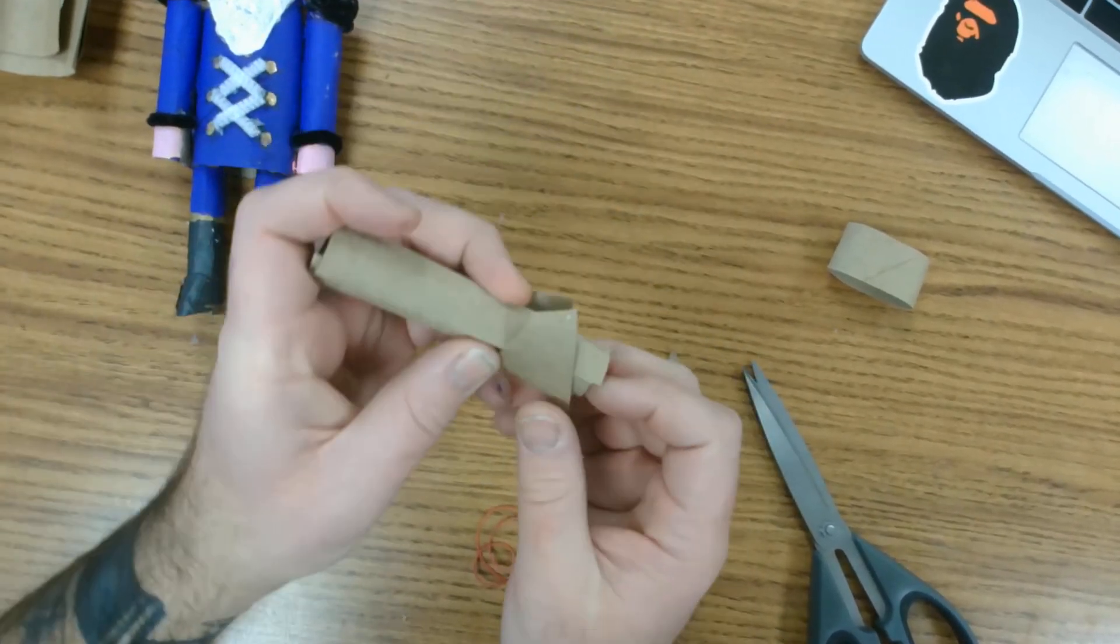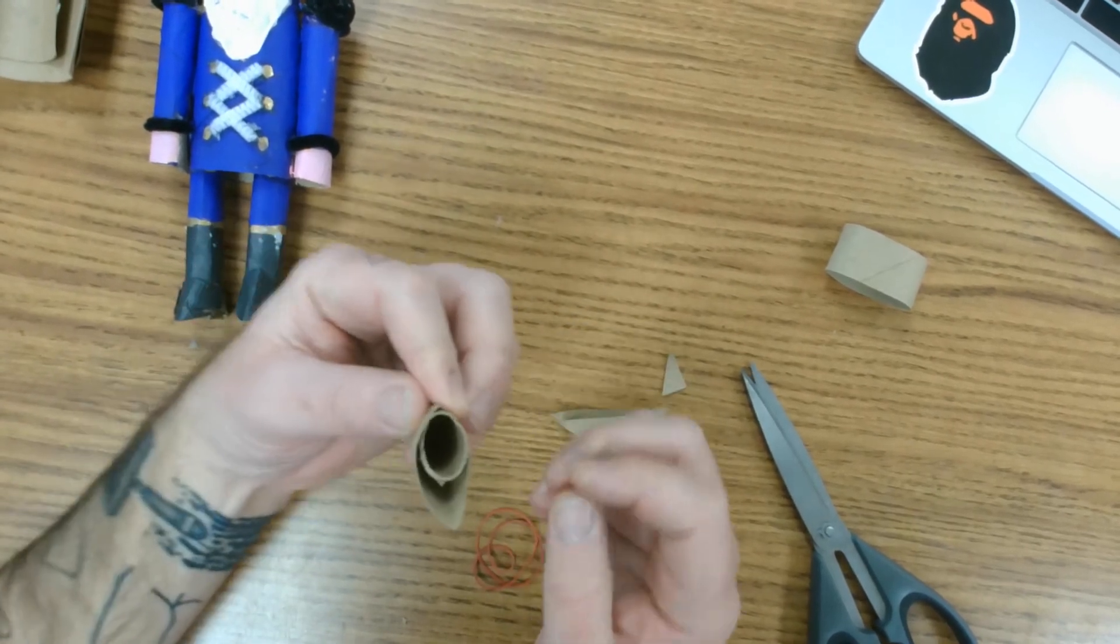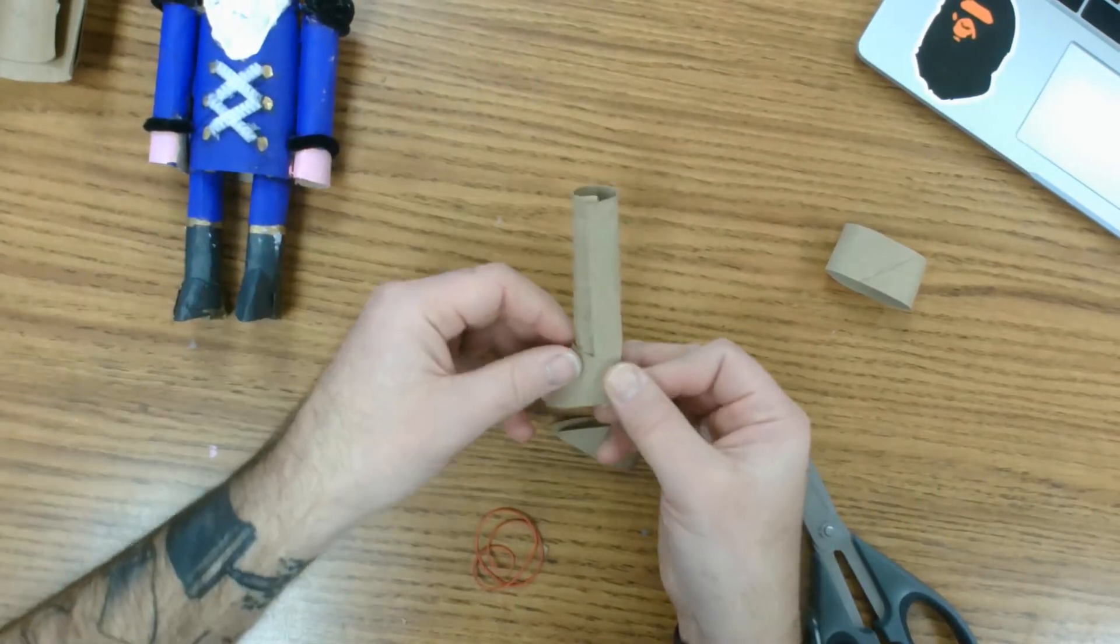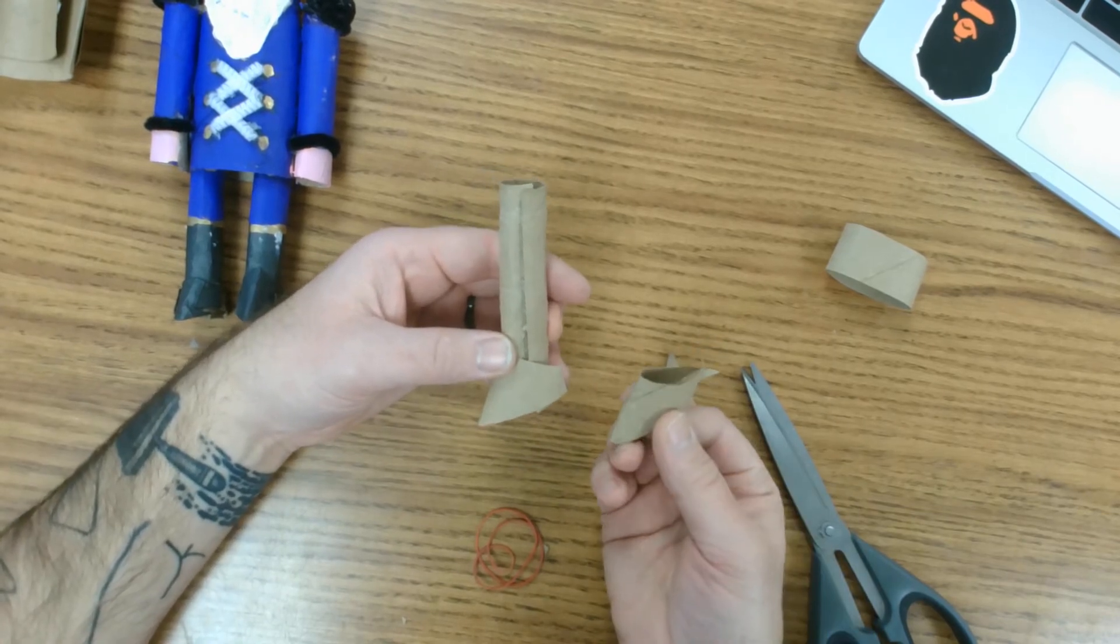What you want to make sure you do is make sure this edge gets lined up with the bottom of the tube. You don't want it like this, because then it's still only going to be standing on that tube. We want it to stand on the tube but also have support out front.